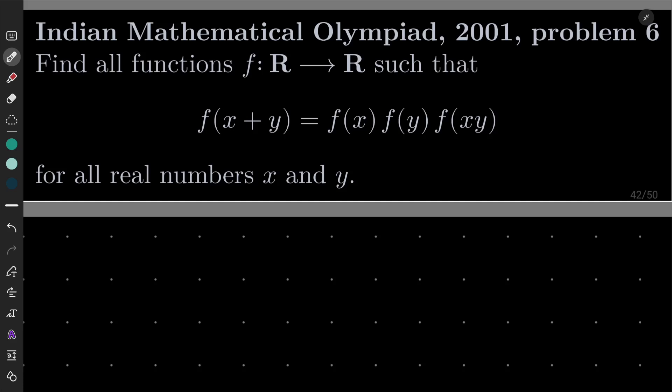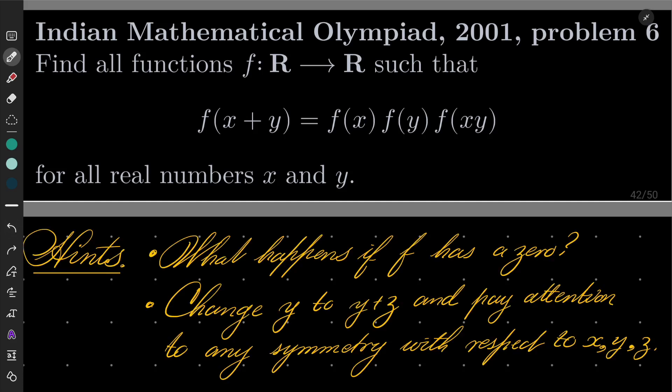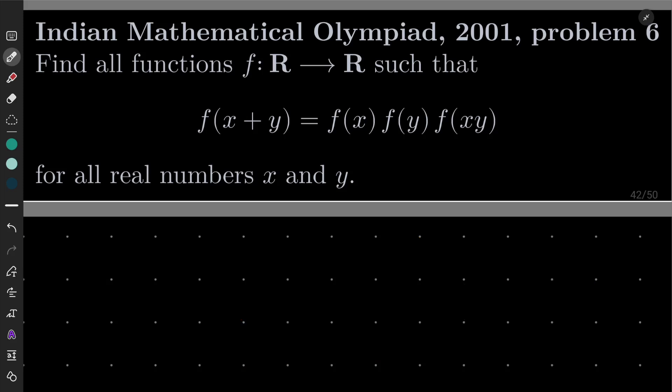Here are my hints. First, consider the case when f has a zero — what happens if f equals 0 for some argument? And crucially, the funny part: then change y to y plus z, introducing a third variable, and pay attention to any symmetry going on with respect to x, y, and z. Give this problem a try and I will see you in a minute.